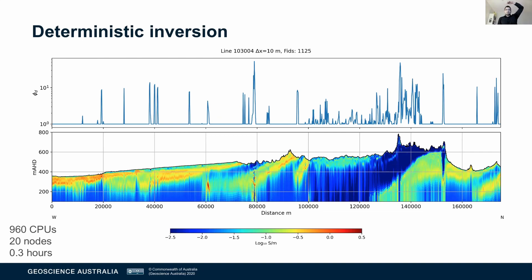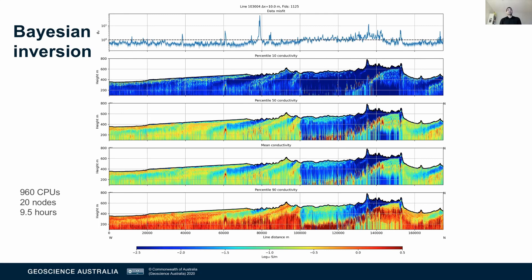Those of you who say 'this is just one image — what about the uncertainties and non-uniqueness?' — here we are: you can do a Bayesian inversion. I used the same number of CPUs and nodes, but because you're sampling multiple numbers of times it's going to take a lot more time. But you get the message: you can do a deterministic inversion, you can do Bayesian inversions to figure out the uncertainties. All the good stuff is within the package.